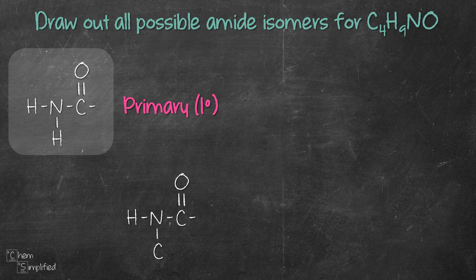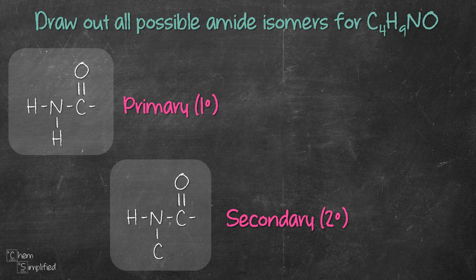If we have a carbon connected to one of the bonds on the nitrogen, then we have a secondary amide because the nitrogen is connected to two carbons. Lastly, if all the bonds on the nitrogen are connected to carbons, then we have a tertiary amide.